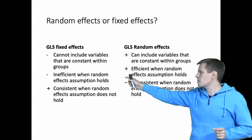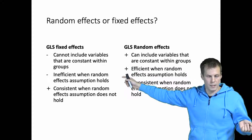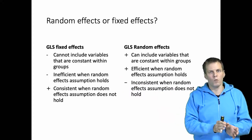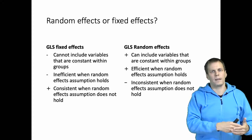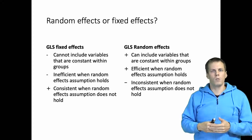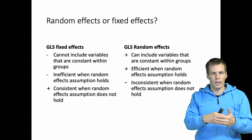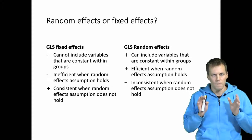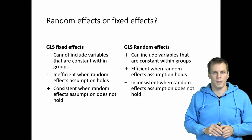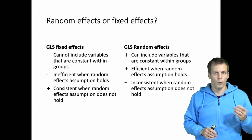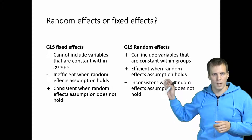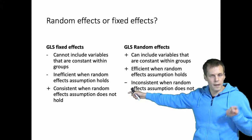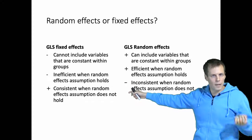As another disadvantage, fixed effects is inefficient when the random effects assumption holds. The idea is that when the random effects assumption holds, the between effect and the within effect are the same, and we get a more precise estimate of the within effect by using the between effect to help in estimation. In the fixed effects approach you eliminate any between effects and therefore lose efficiency compared to the GLS random effects approach. As an advantage, the fixed effects approach is consistent even when the random effects assumption does not hold.